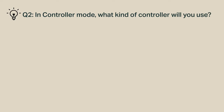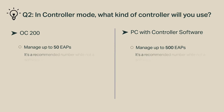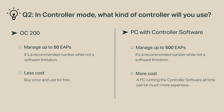In controller mode, what kind of controller will you use — an OC200 or a PC with controller software? An OC200 can manage up to 50 EAPs, while a PC with controller software can manage up to 500. It's a recommended number, not a software limitation. Besides, an OC200 costs less than a PC running the controller software all the time.